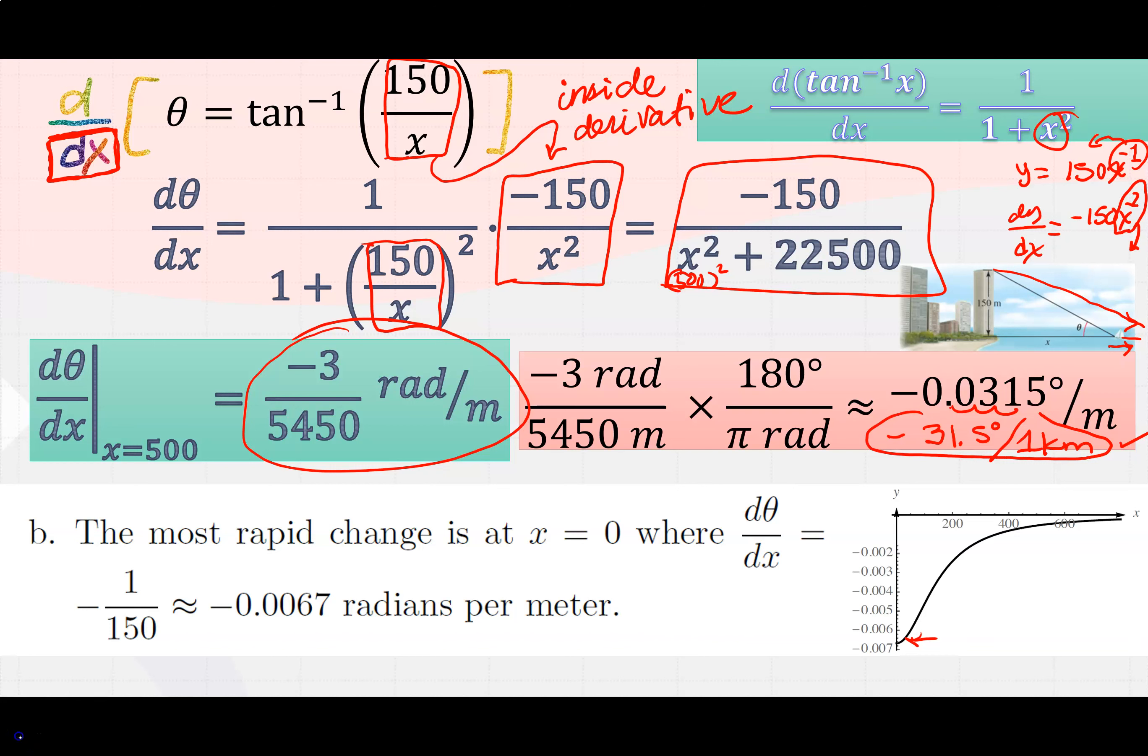The question is asking what is the rate of change of the angular size? dθ/dx - the change of the angle with respect to that distance, that horizontal distance x, when the boat is out at 500 meters from the building. And then part b is asking you when is that change the greatest?